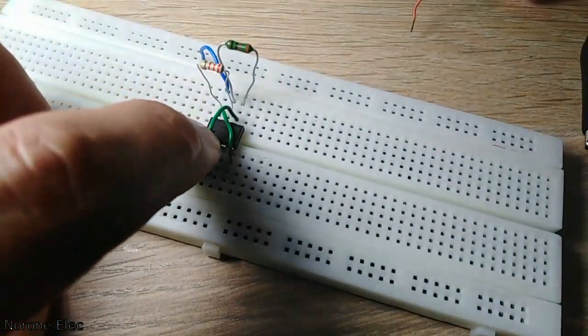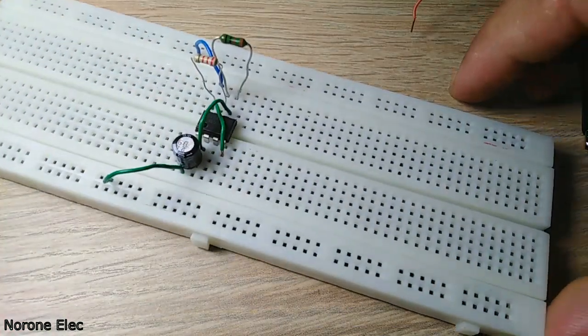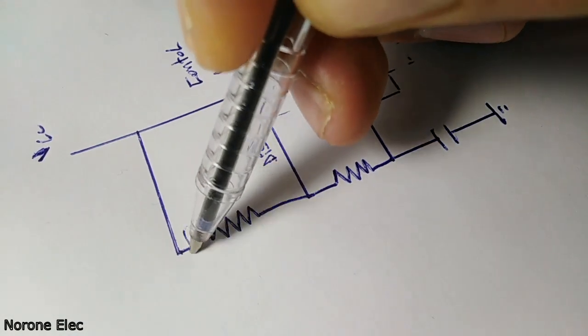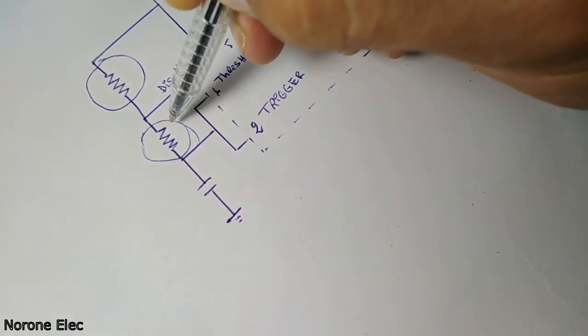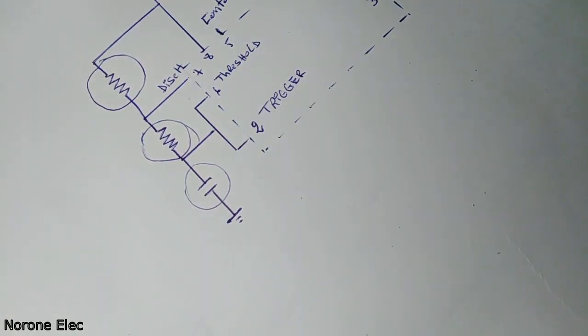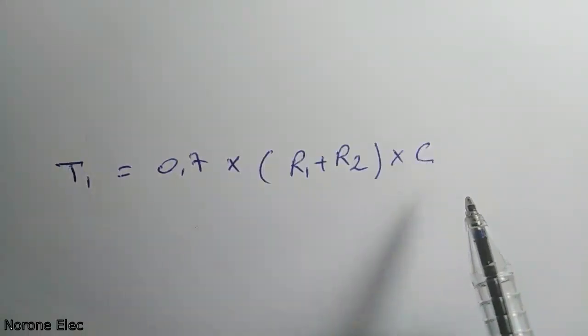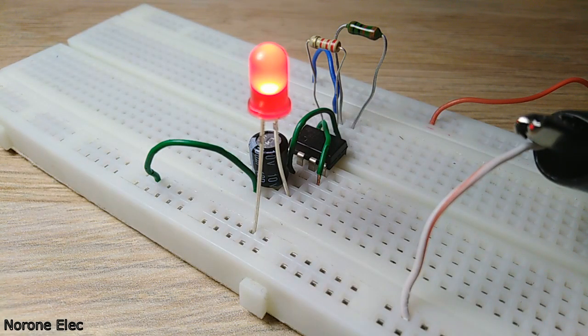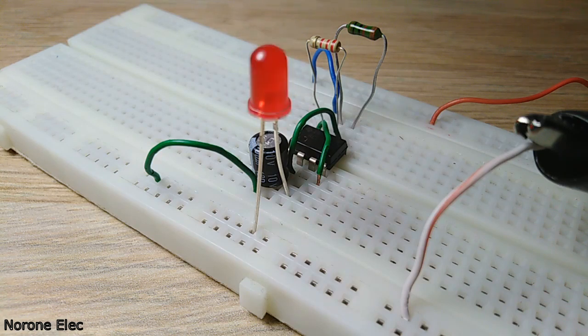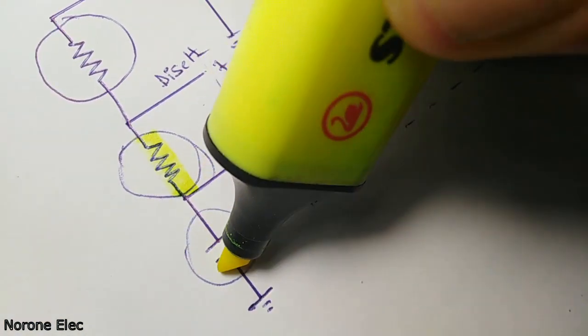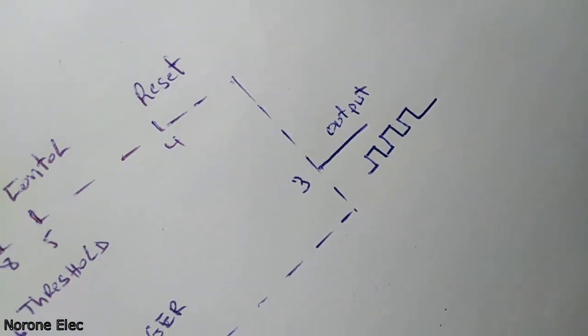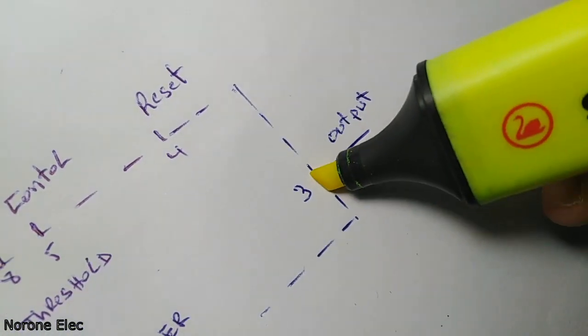The output is high when the capacitor is charging through the two resistors R1 and R2. It can be calculated by this formula. The output in pin 3 of the IC is low when the capacitor is discharging through only the resistor R2, so the time the square is low can be calculated by this formula. We can get different on and off times by changing the values of any of these three components.